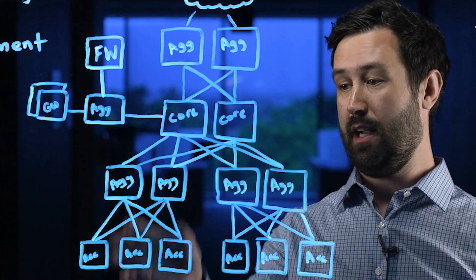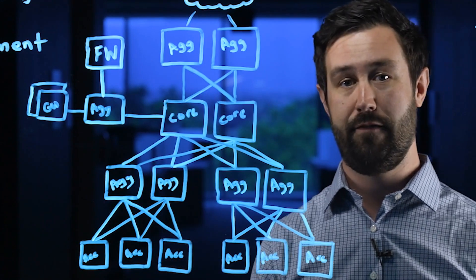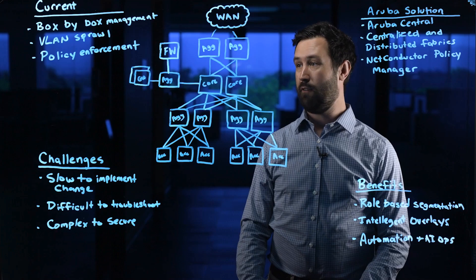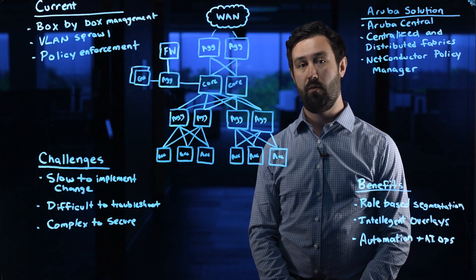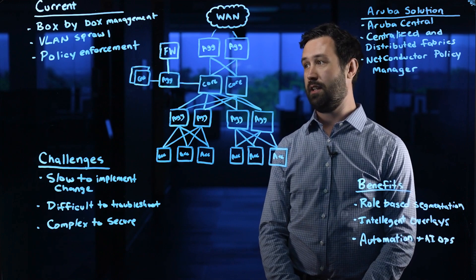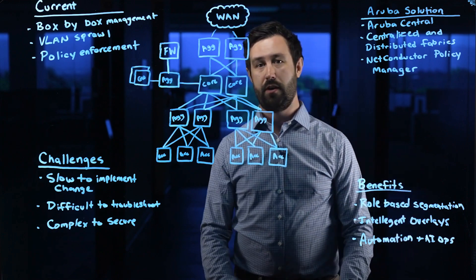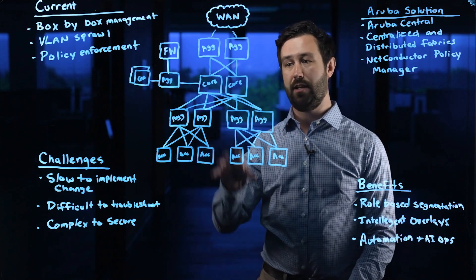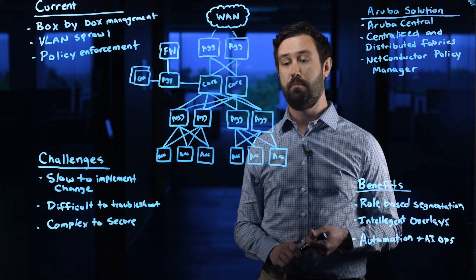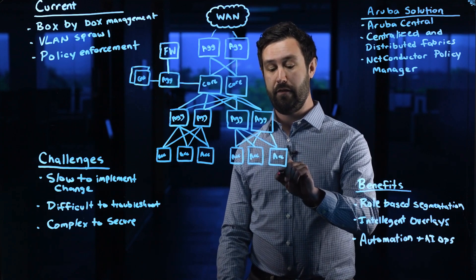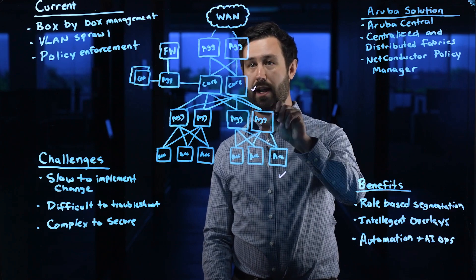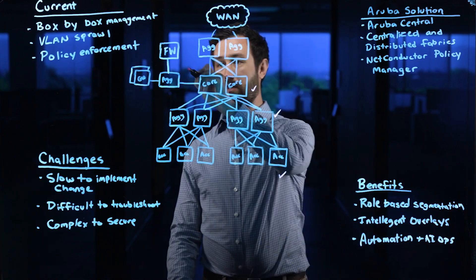We have the traditional LAN network that I'm sure we're all familiar with. We have a core layer, an aggregation layer, and an access layer for client connectivity. On the left, we have an aggregation block where we connect our wireless AOS 10 gateways and firewalls. And on the top, we have a WAN aggregation block where we connect our WAN services to the network. This traditional network poses some challenges. The first is box-by-box management — anytime we want to make a change to this network, we're having to touch multiple points. We may need to add new VLANs to the access layer, new VRFs or routing instances to the core and aggregation layer, and new zones to the firewall.